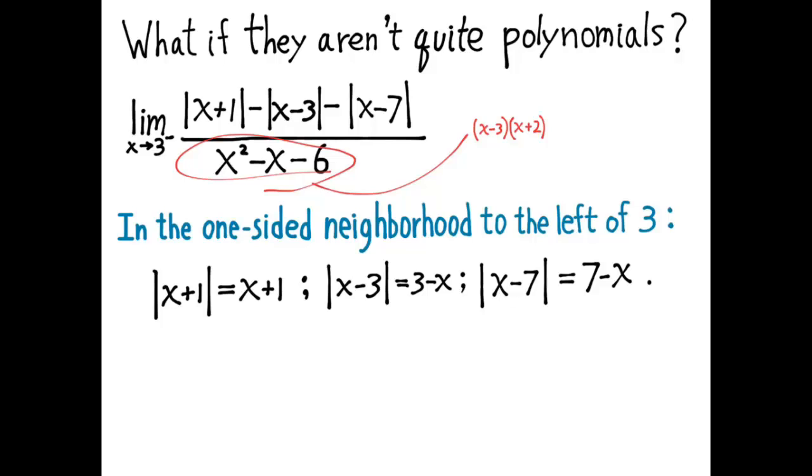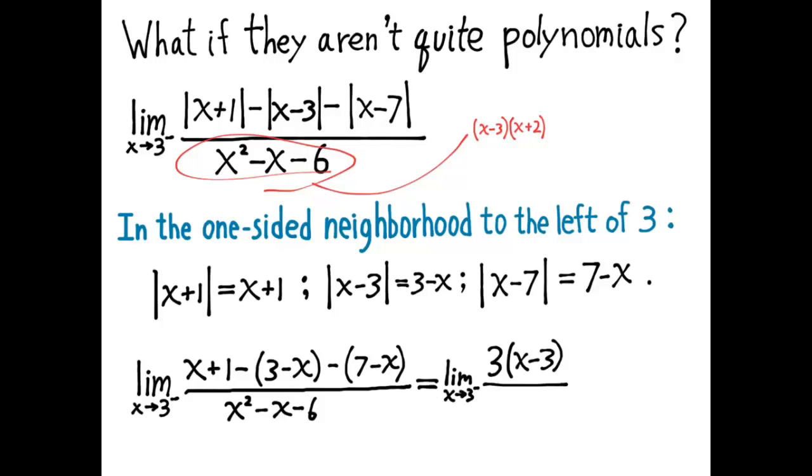So if I replace all of my absolute values with the appropriate replacements, then I get a polynomial over a polynomial. And that can now be factored, and the zero over zero problem gets factored out and canceled, and we have 3 over 3 plus 2, which is 3 fifths.